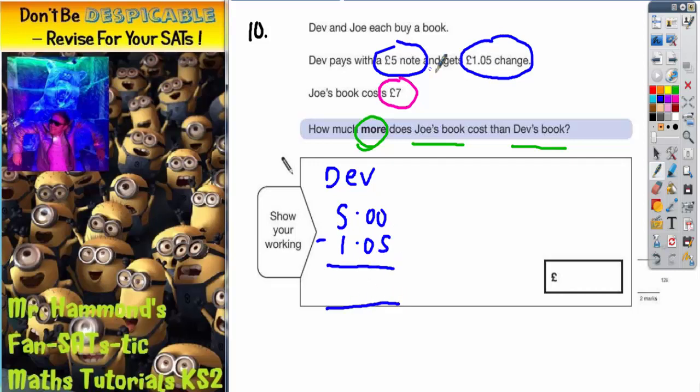You could do that in your head. If I take off five pence, that would be £4.95, and if I take off the pound, that would be £3.95. So Dev's book costs £3.95.